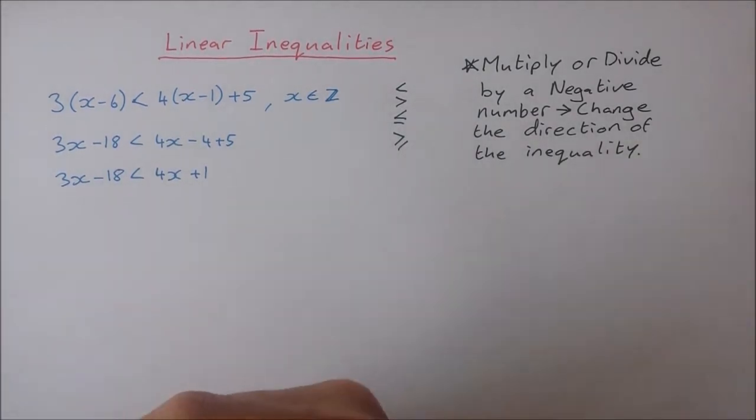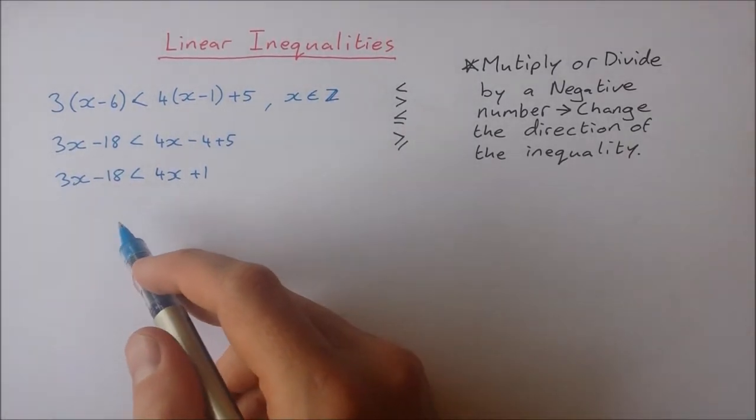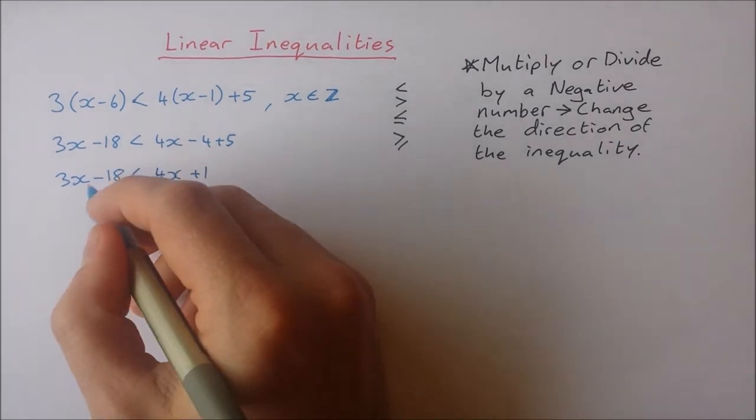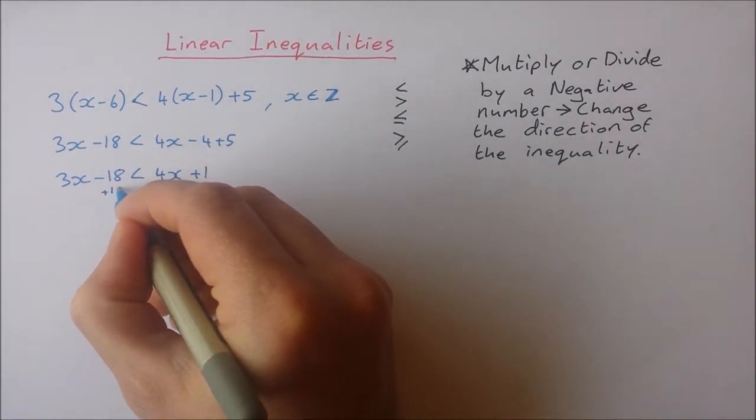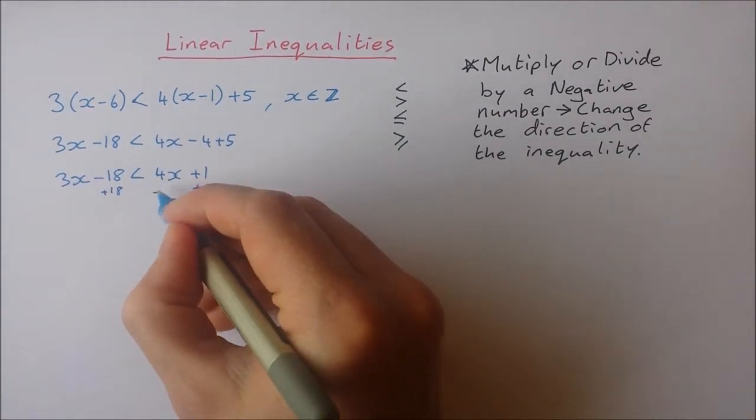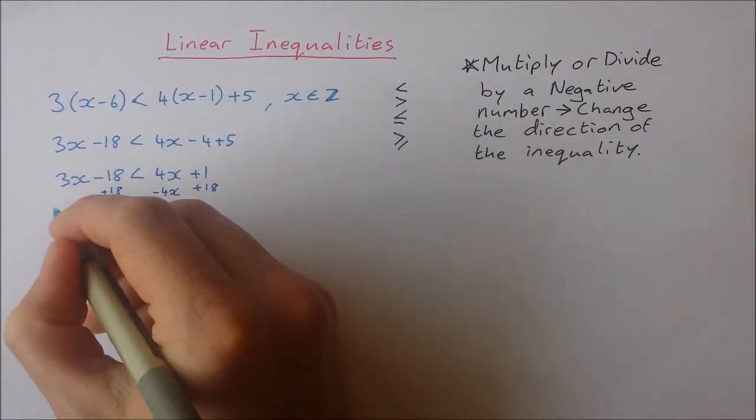Okay, the same as what I would do with an equation. I'm going to get my unknowns to one side and my constants to another side. So I'm going to get rid of this 18 minus 18 here by adding 18 to both sides. And I'm going to remove this 4x from here by subtracting 4x from both sides.